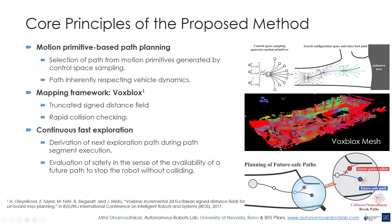To address the above problem, we propose a motion primitives-based path planning methodology. Paths are generated by sampling the control space of the robot; hence they respect the dynamics of the robot, aiding to the high-speed motion. The proposed planner uses VoxBlocks as the mapping framework. It is based on truncated signed-distance fields and has been demonstrated to generate Euclidean signed-distance fields dynamically and fast.